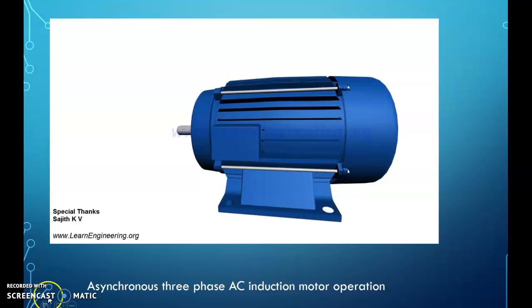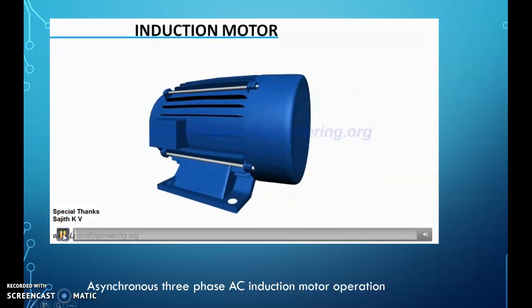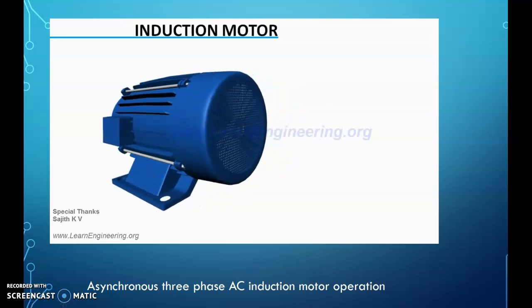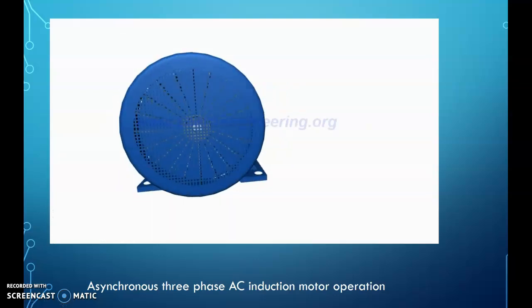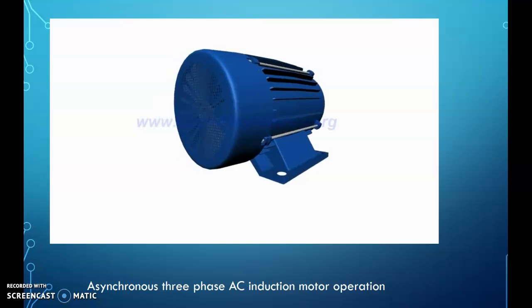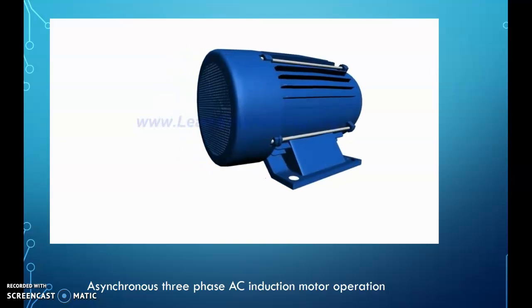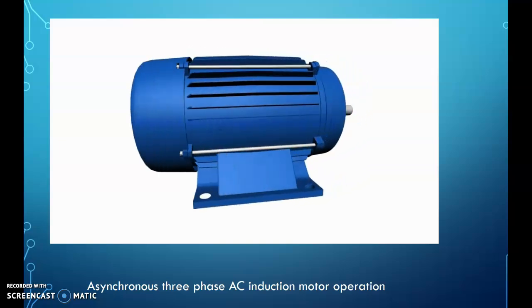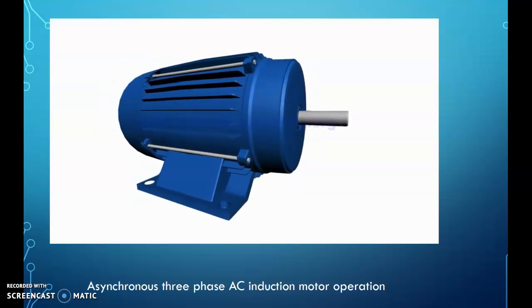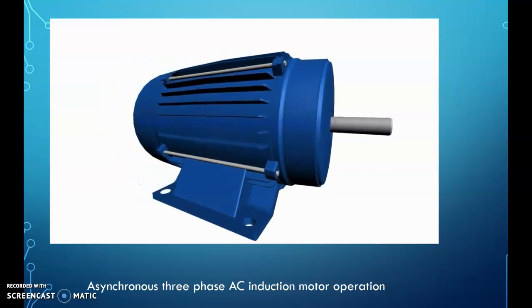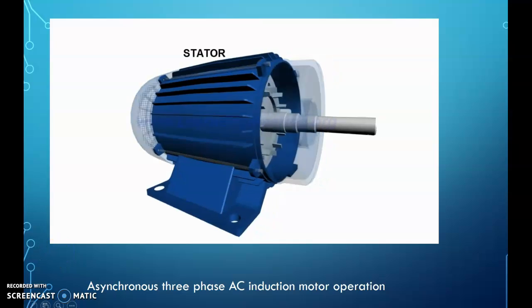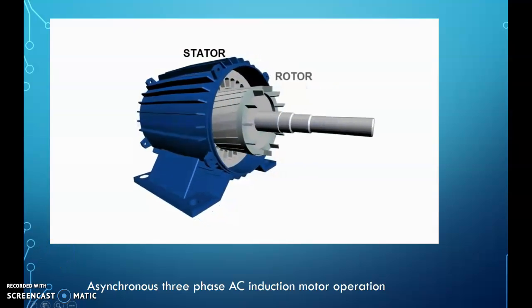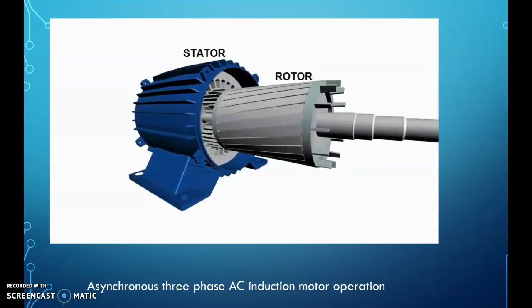Let's take a look at an asynchronous AC induction motor. Induction motors are the most commonly used electrical machines. They are cheaper, rugged, and easier to maintain compared to other alternatives. In this video, we will learn the working of a three-phase squirrel cage induction motor. It has two main parts: stator and rotor. Stator is a stationary part, and rotor is the rotating part.